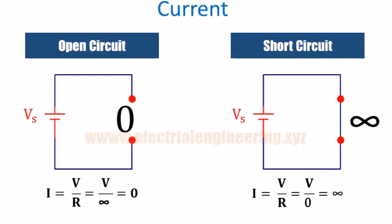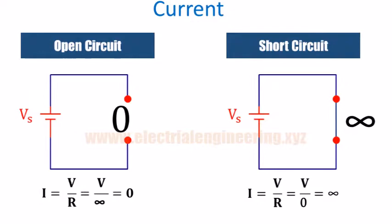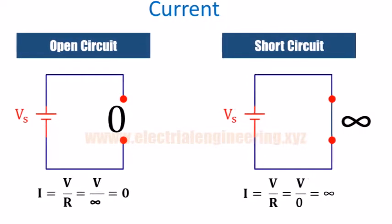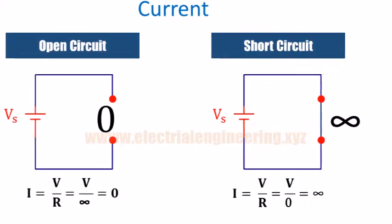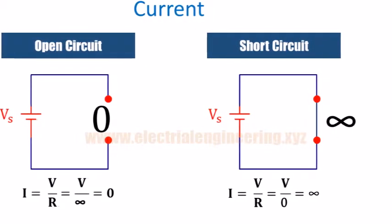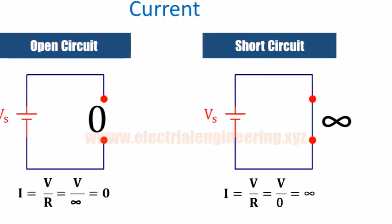One can also understand the current in terms of resistance. The resistance in an open circuit is maximum. From Ohm's law, there is no current through an open circuit, whereas in a short circuit the resistance is zero and from Ohm's law current is infinite.